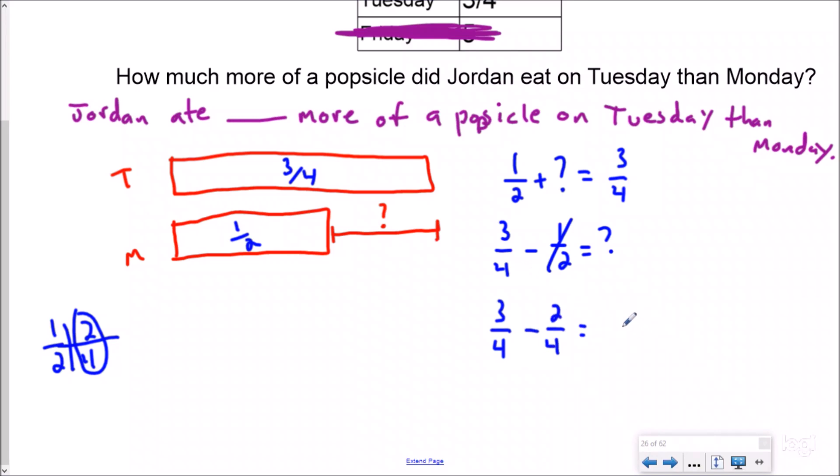which means my answer is one fourth. This question mark is one fourth, which means Jordan ate one fourth more of a popsicle on Tuesday than Monday.